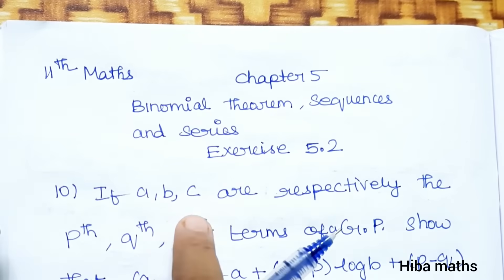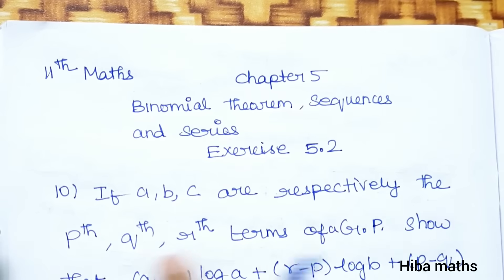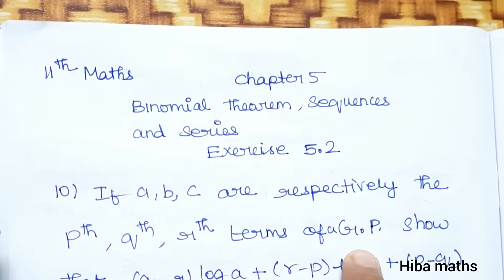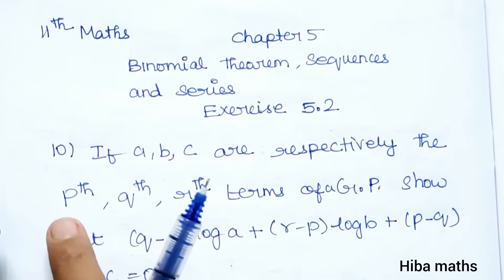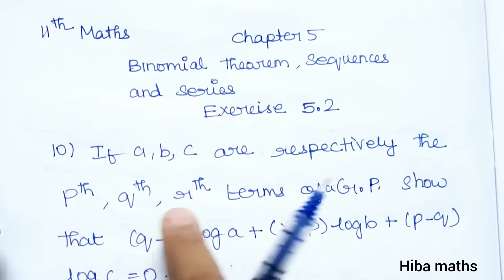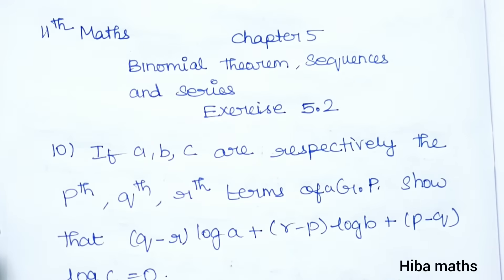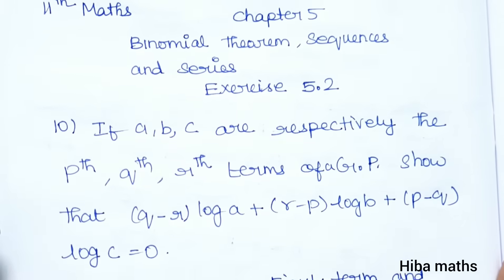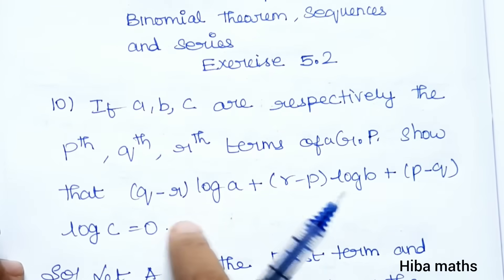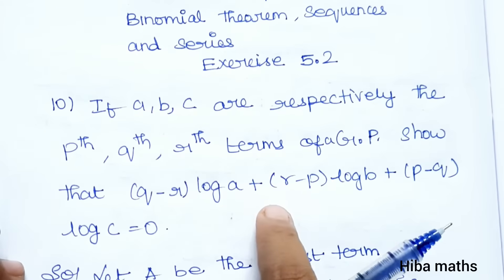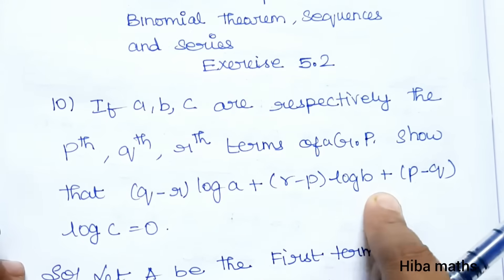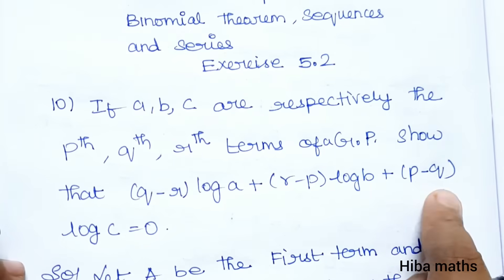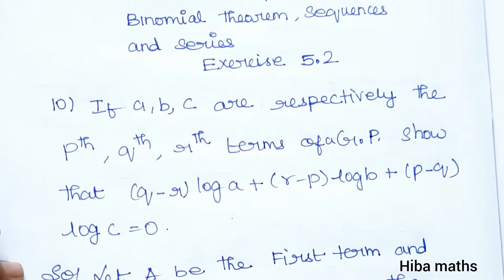If A, B, C are respectively the P, Q, R terms of a GP, show that (Q minus R) into log A, plus (R minus P) into log B, plus (P minus Q) into log C is equal to 0.